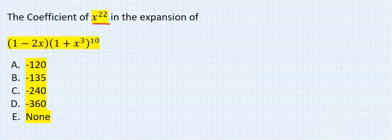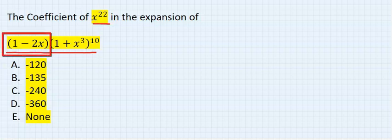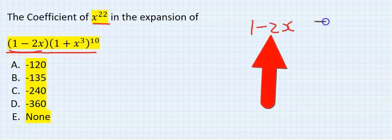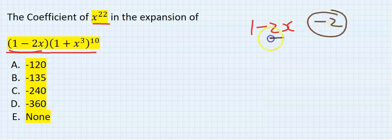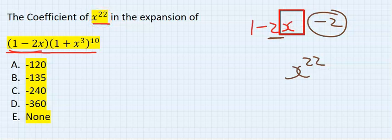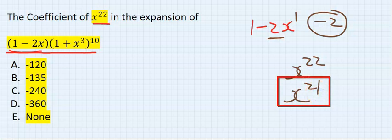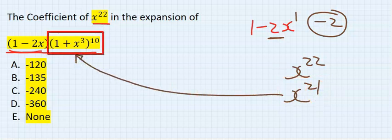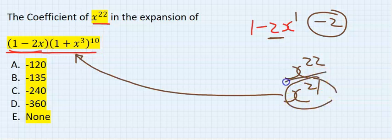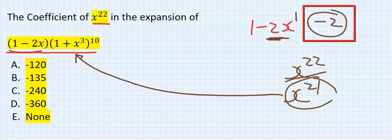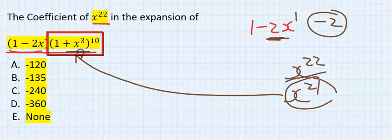Find the coefficient of x to the power of 22 in this expansion. In the first bracket, which is 1 minus 2x, the coefficient of x is minus 2. I'm asked to find x to the power of 22, so I've found just one of the x to the power of 1. What remains now is x to the power of 21, so in the second bracket I will be looking for x to the power of 21, not x to the power of 22, because I've already found the coefficient of x. This minus 2 will wait until I finish with the second bracket.